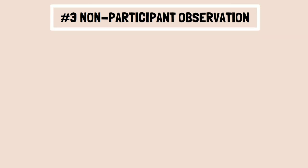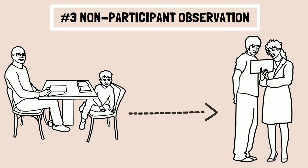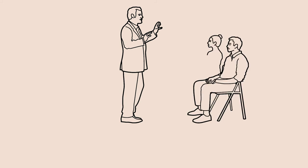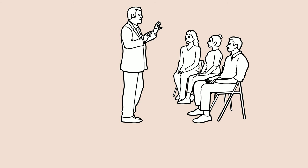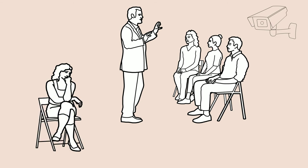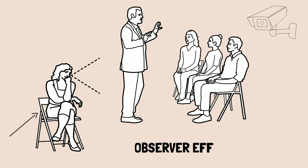3. Non-Participant Observation: In this type of observation, you will observe the person or event from a distance. Here, the person being observed may not be aware of the observation taking place. For example, you may want to observe the pattern of interaction between teachers and students in a particular class. You can install a video camera to record the classroom activities, which you can later see and analyze. Alternatively, you may decide to sit in a corner of the class without interfering or participating in classroom activities. The danger in this type of setup is that the very fact that someone, an outsider, is sitting and observing may bring a change in the behavior of the students and the teacher. This is known as observer effect.